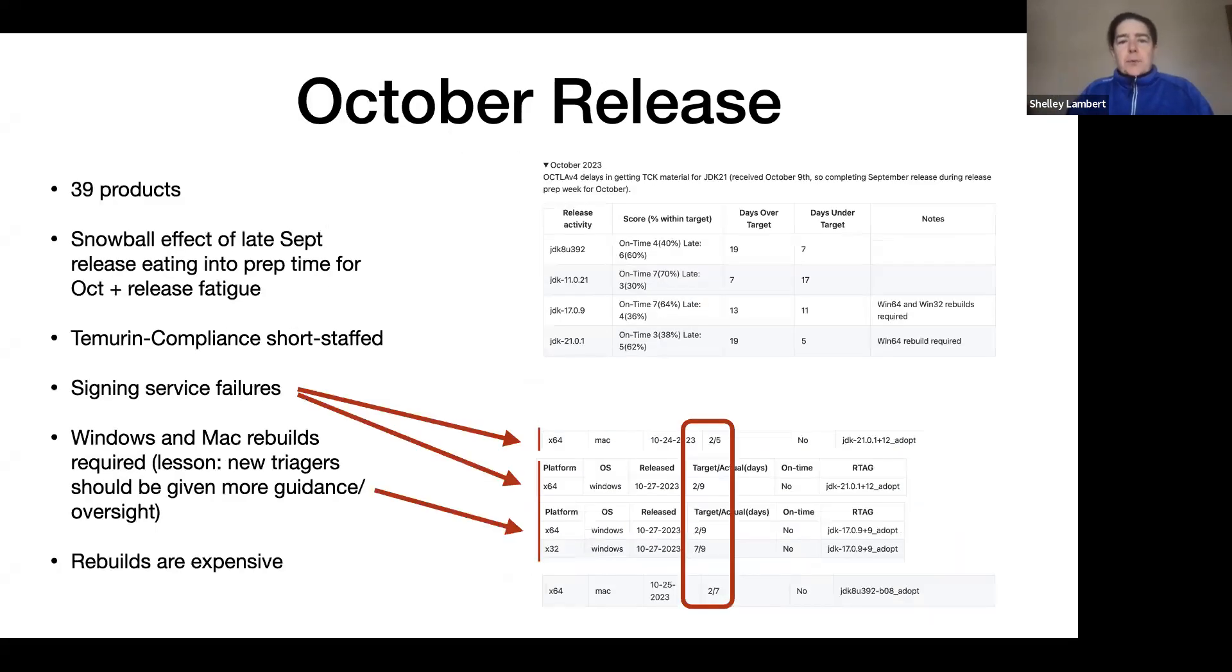So October release, when we look at what that is, a much, much bigger release. It's actually 39 products, and I say products because we had four different Java versions in there and in those versions a selection of platforms that we produce.